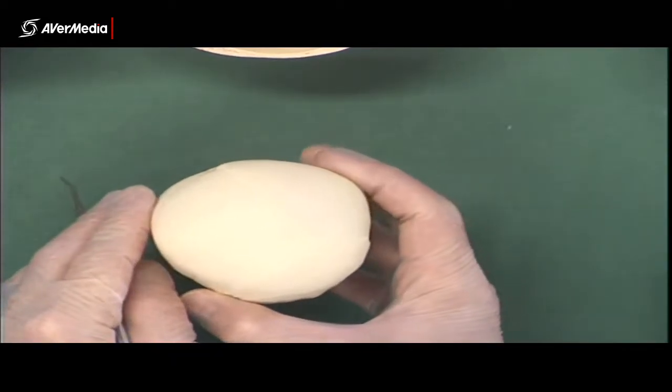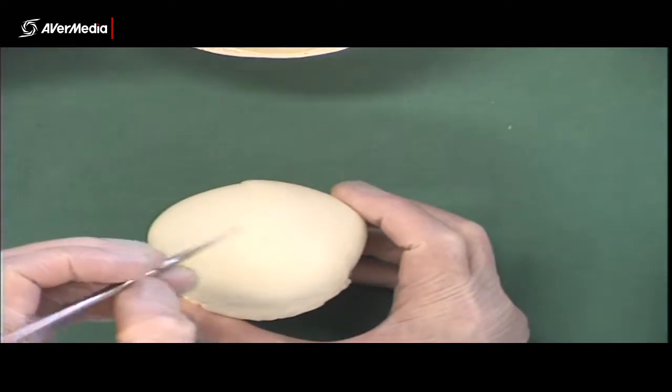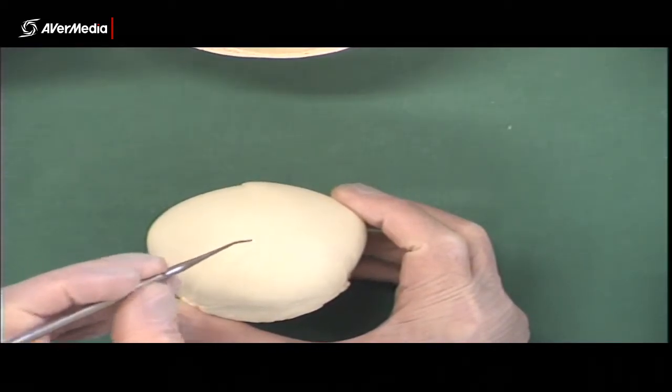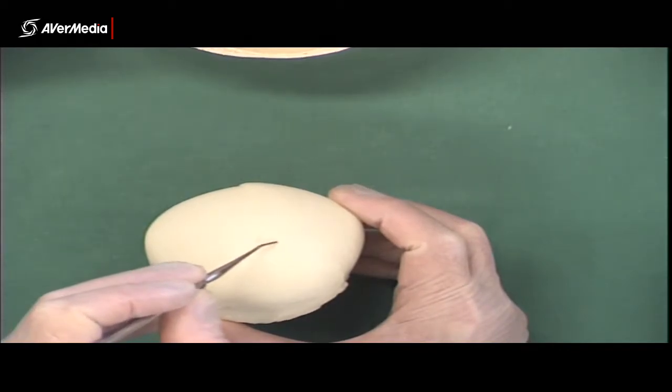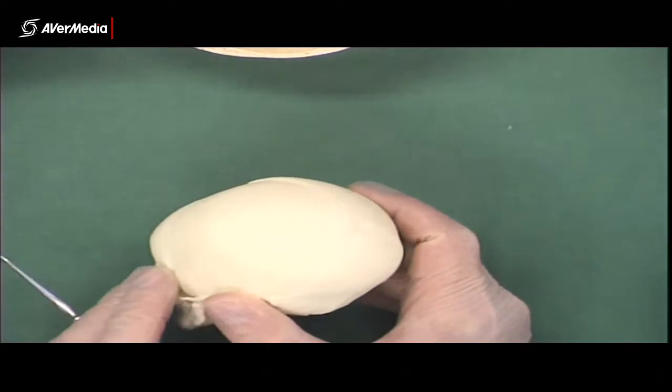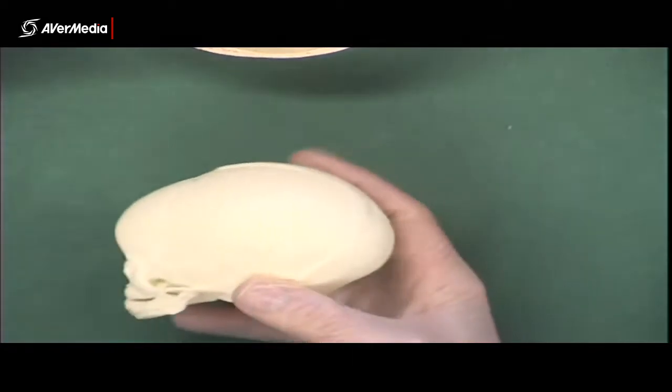Now there should also be a posterior one and they're not really showing it on the model. So here at what will become lambda, there should be a posterior fontanelle, but it's not really there clearly like the anterior one is.